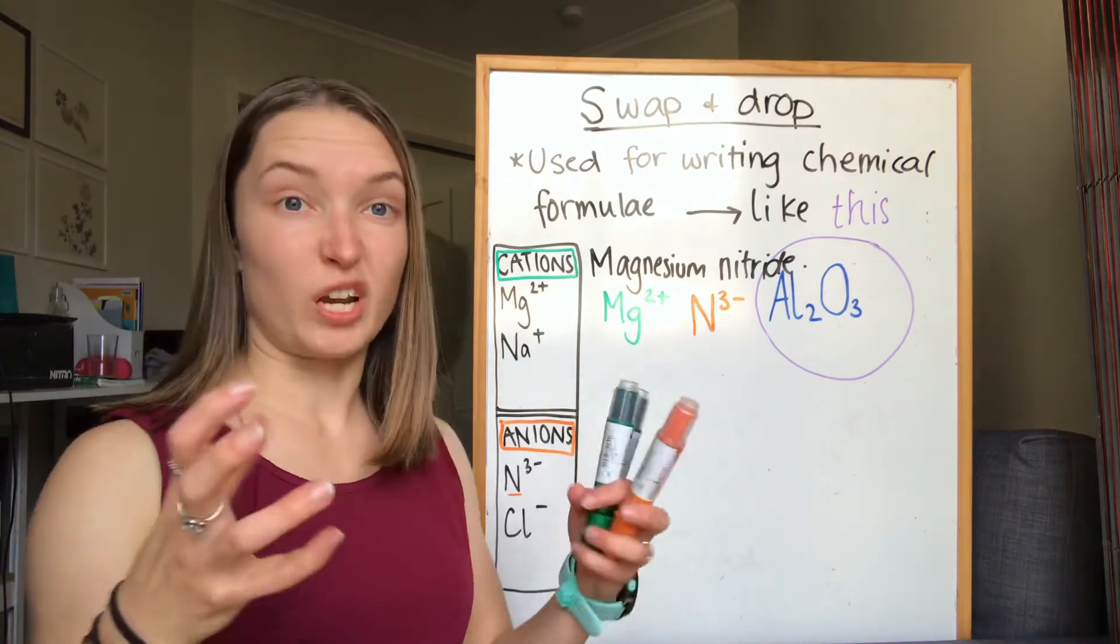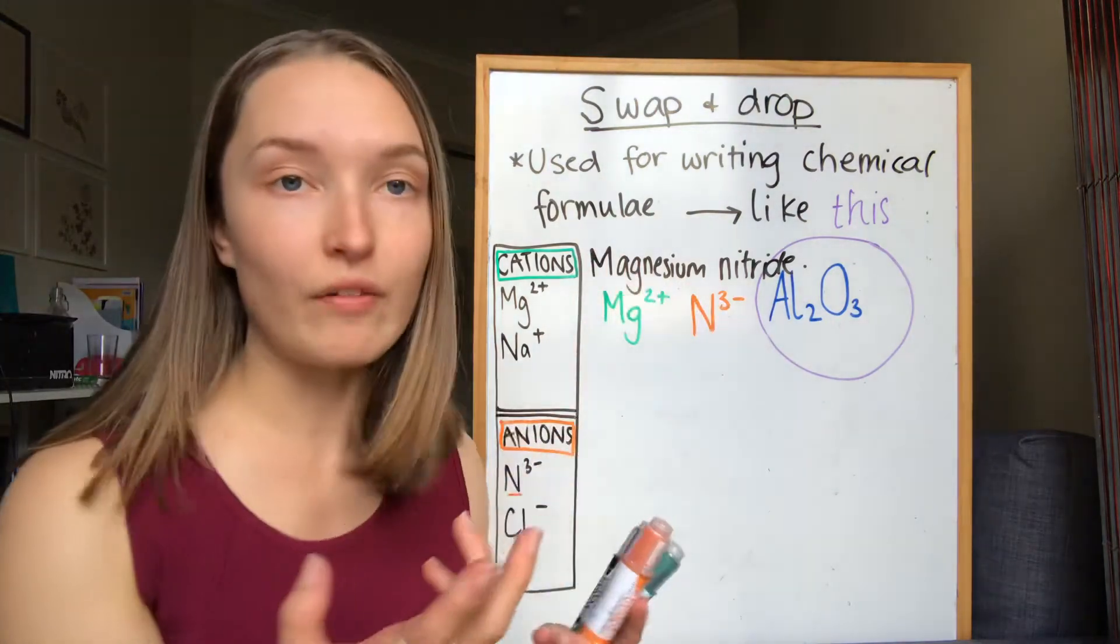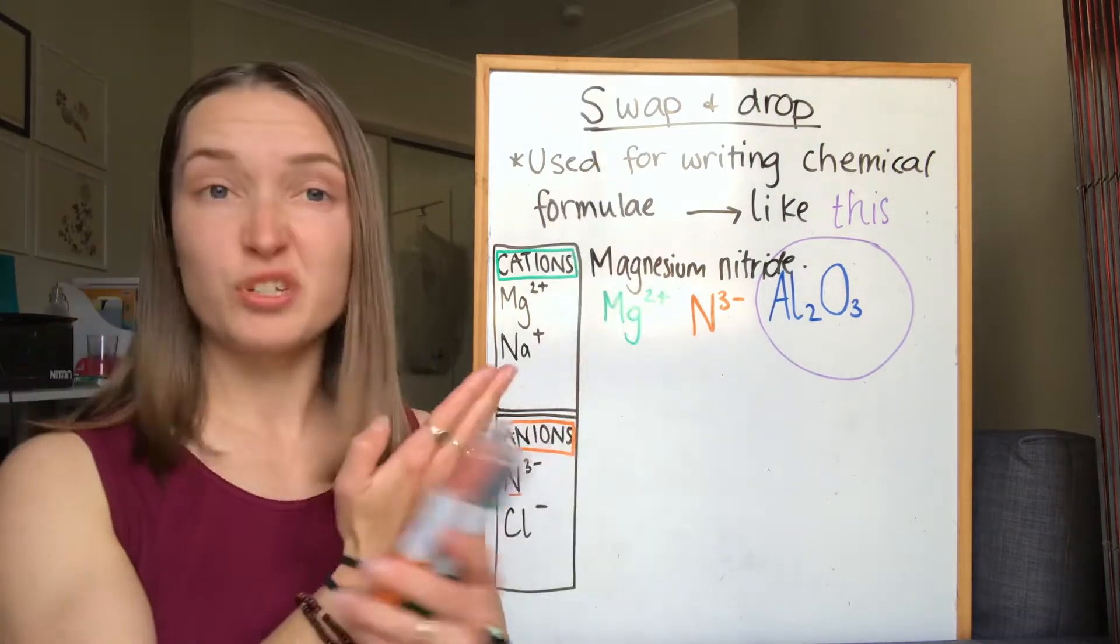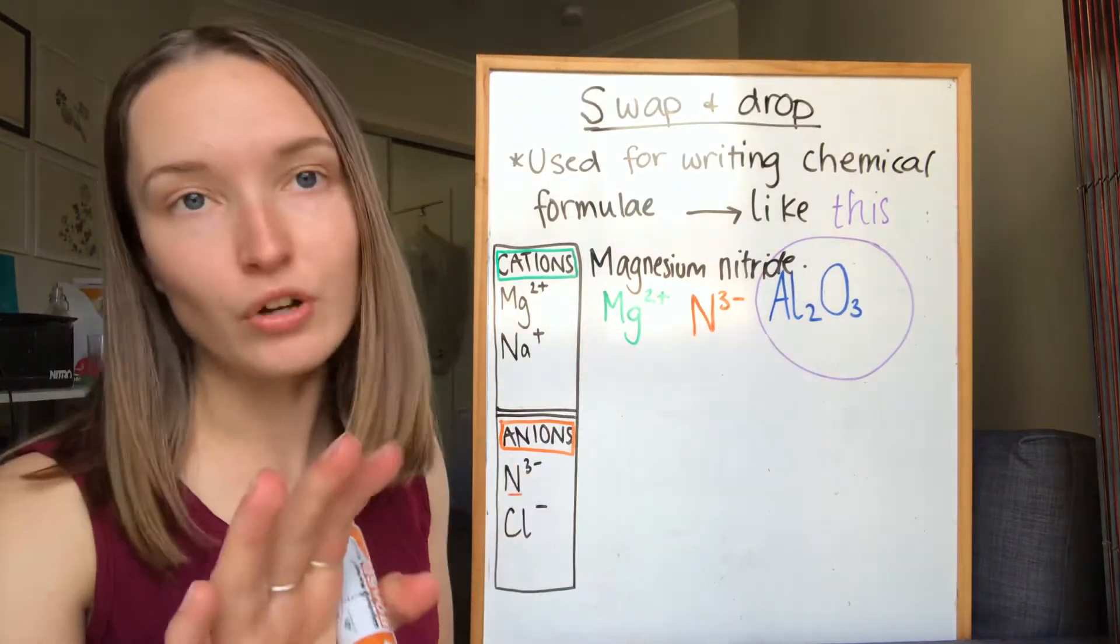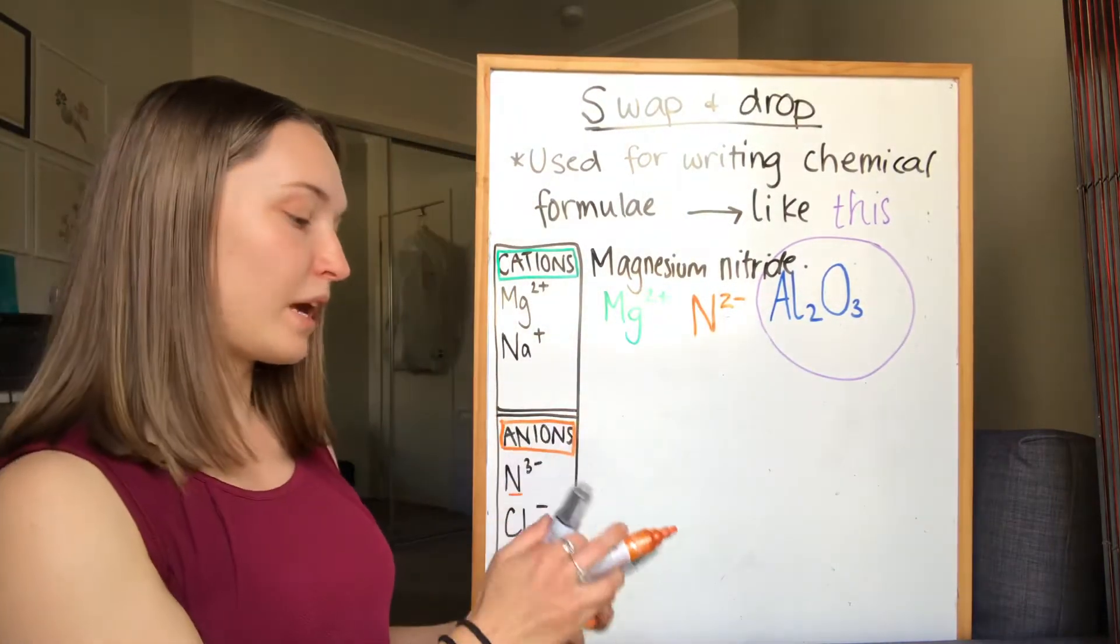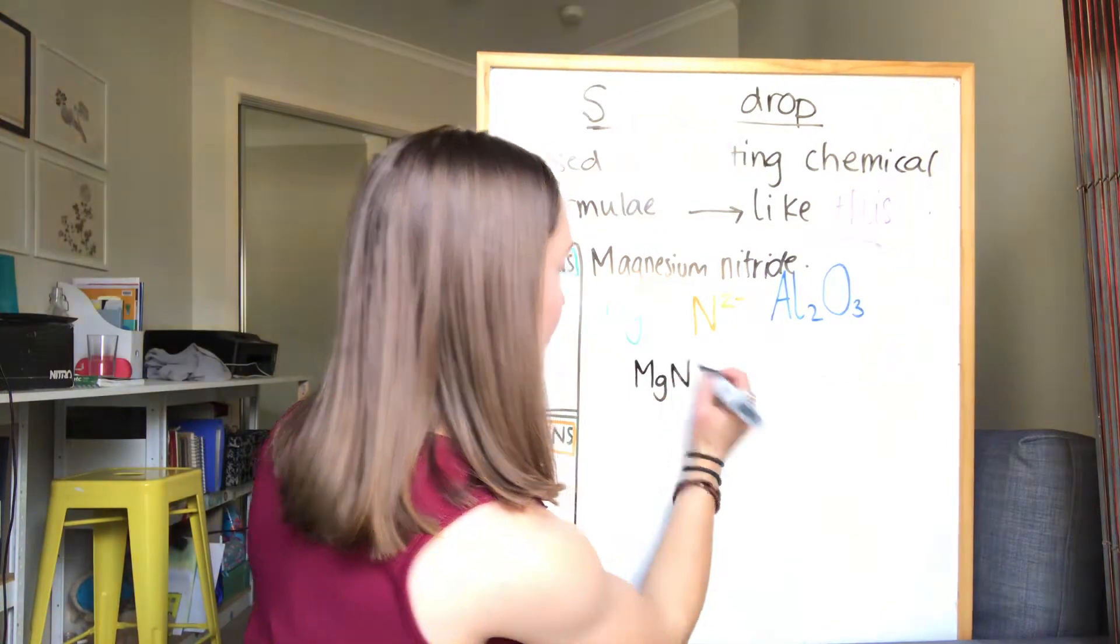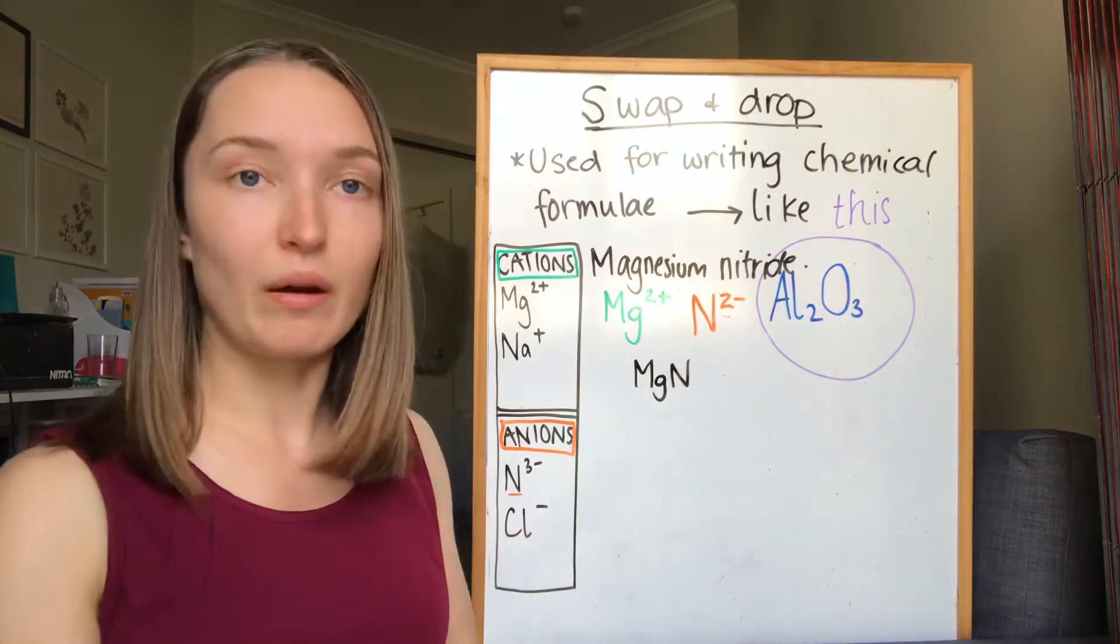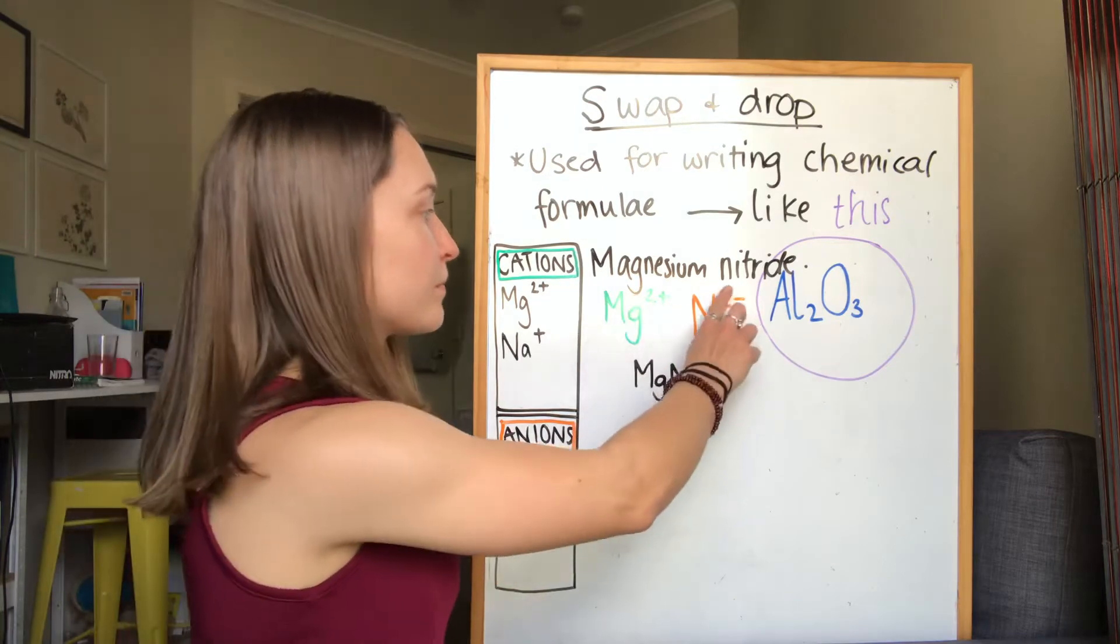Now before we do the swap and drop method, we need to check whether we actually need to do it at all. If the two ions have opposite charges, one positive and one negative, and they're the same number, the numbers just cancel each other out and you would write that straight underneath. So let's just say this was two minus, they would cancel each other out and your answer would be just like that. You would have no numbers down here, no charges up the top. That would be the answer and you don't need to do the swap and drop. But because they are different, we have two plus on the magnesium and three minus on the nitride, we do need to do the swap and drop.